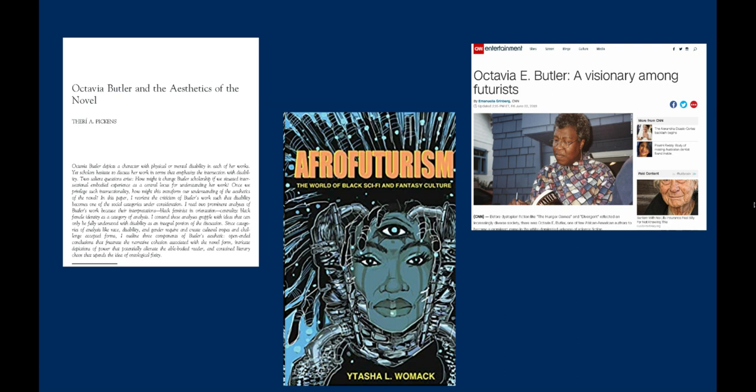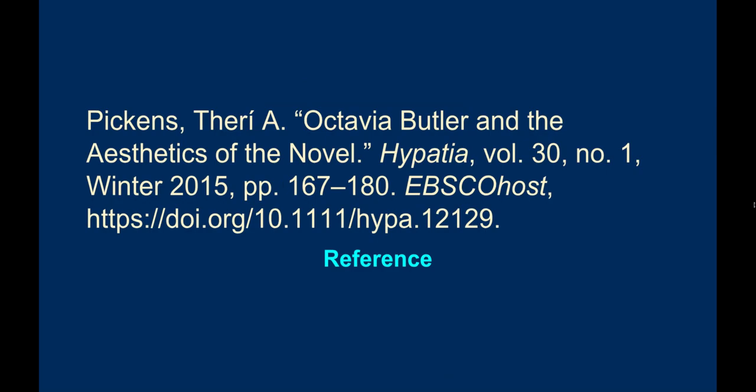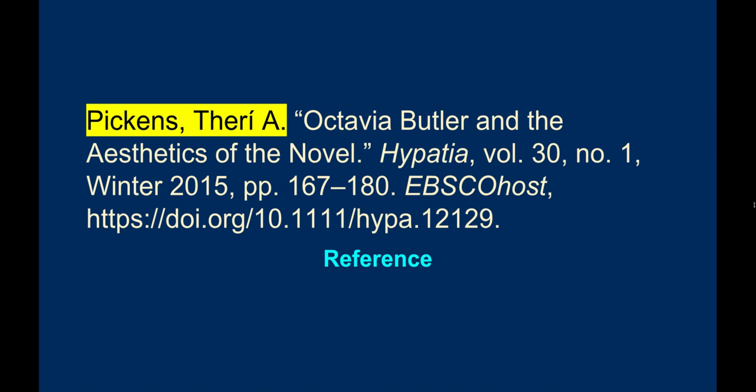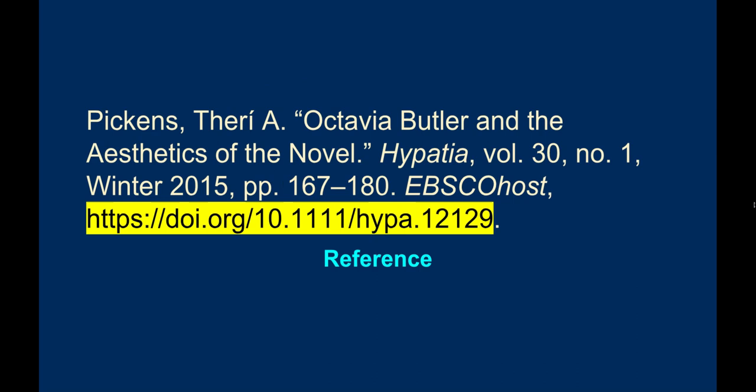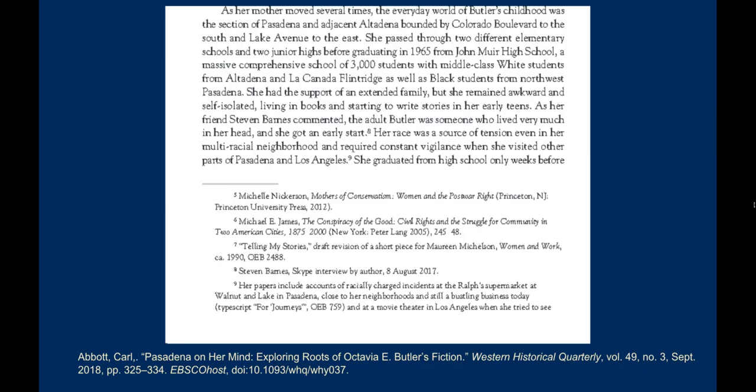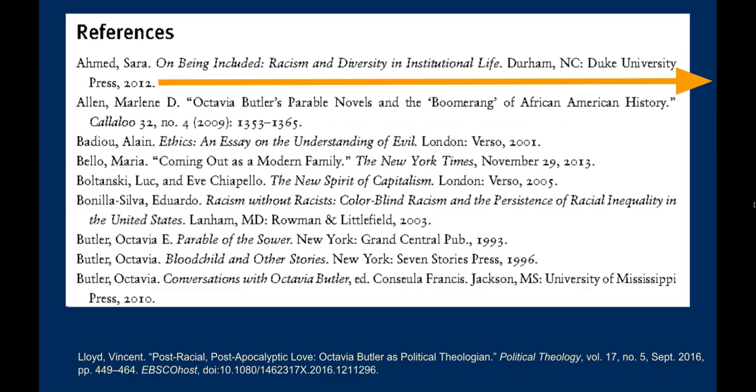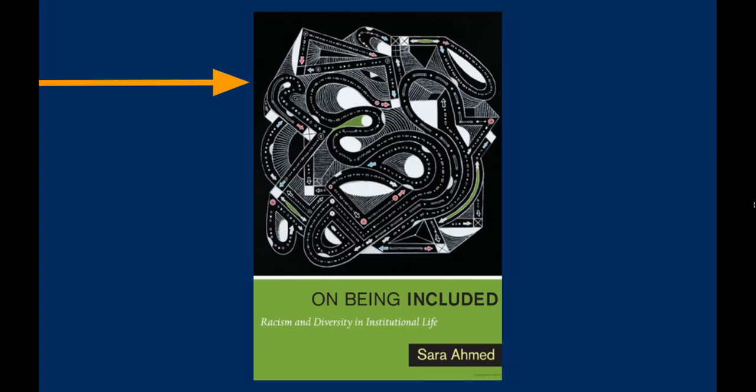In-text citations provide a roadmap to the second part of a citation, the reference. The reference includes more information about each source, including the author, the date, the full title, and the web address. You will find citations at the bottom of the page in footnotes, or in a reference or works cited page at the end of a paper. The information in each citation makes it easy for your readers to find the exact sources that you used so that they can read them for themselves.